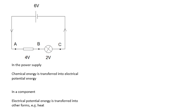In the power supply, chemical energy — if it's a chemical cell — is transferred into electrical potential energy. In a component such as a resistor, bulb, or motor, the electrical potential energy is transferred into something else. For example, in a resistor, electrical potential energy is transferred into heat. Voltage is all about energy.